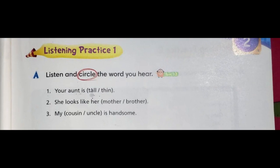Track 12 audio — Exercise A: listen and circle the word you hear. One: 'Your aunt is thin.' Two: 'She looks like her mother.' Three: 'My cousin is handsome.'